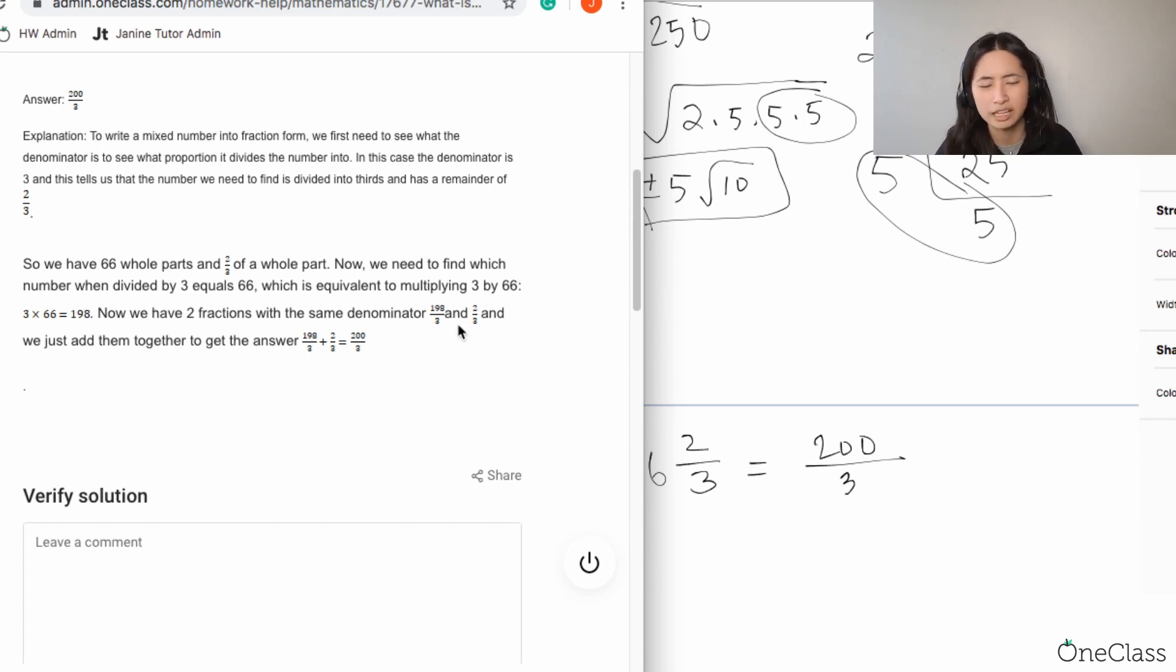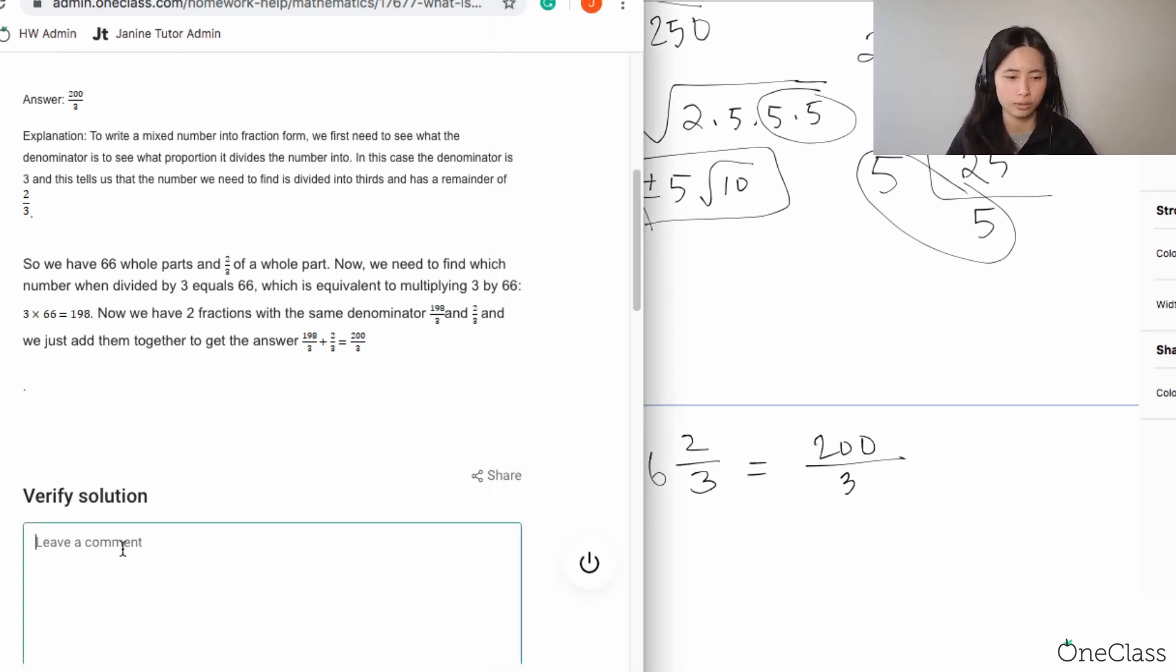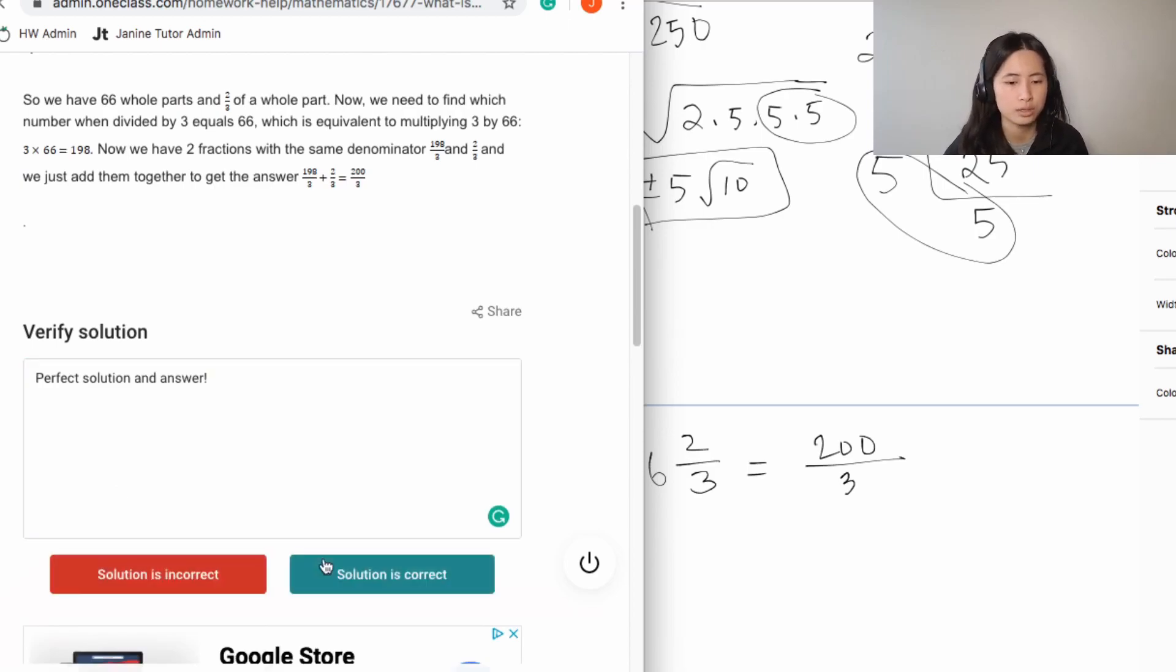They're pretty much trying to do 198 divided by 3. There's going to be multiple ways to find the improper fraction, but because you want to be as efficient as possible, pick any method that works for you. But this is still right—200 over 3. So the solution is correct.